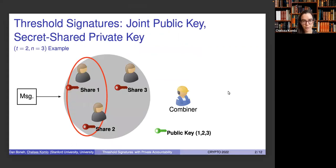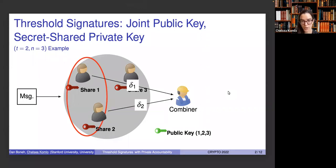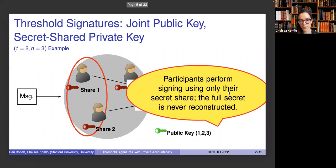As a quick recap about what threshold signatures are: they're a public-private scheme where some set of signers is represented by a single public key, and the private key is a secret shared among some set of signers, where only a threshold are required to issue a signature. Here we can see a message coming in to the set of signers. Two signers will sign and send what we call signature shares to a combiner, and the combiner will output the final signature that represents the group. Importantly, when signers perform signing, they aren't sending their secrets to each other — they're kept locally, and the full secret is never actually reconstructed.